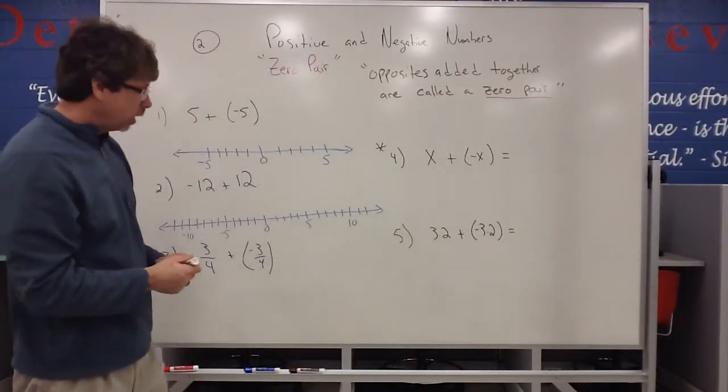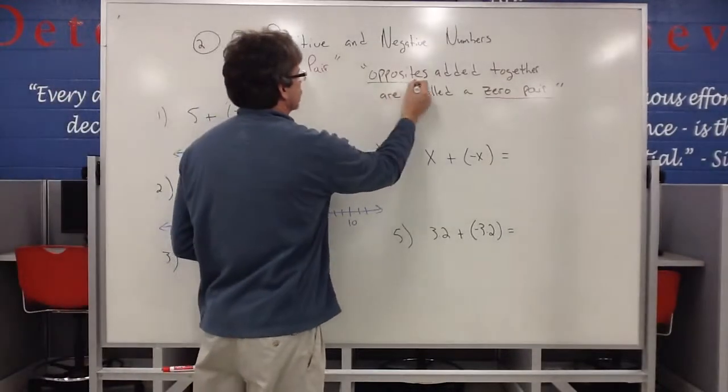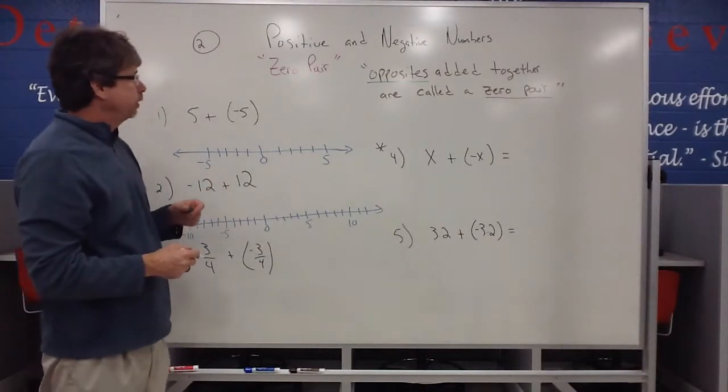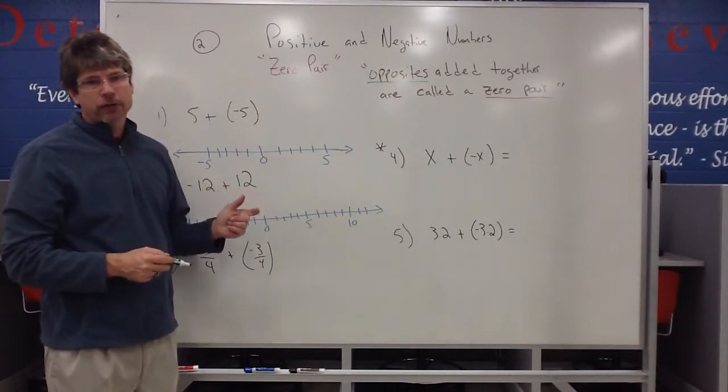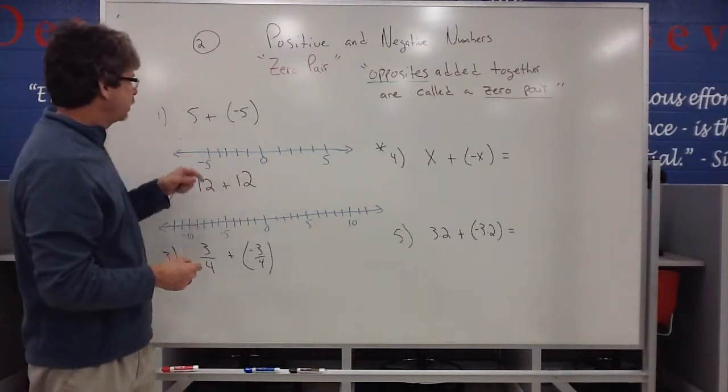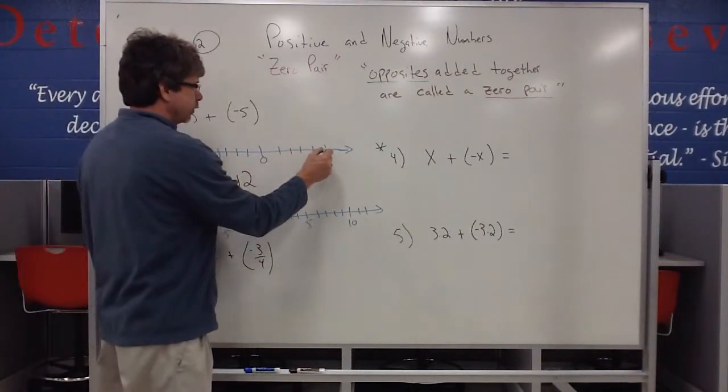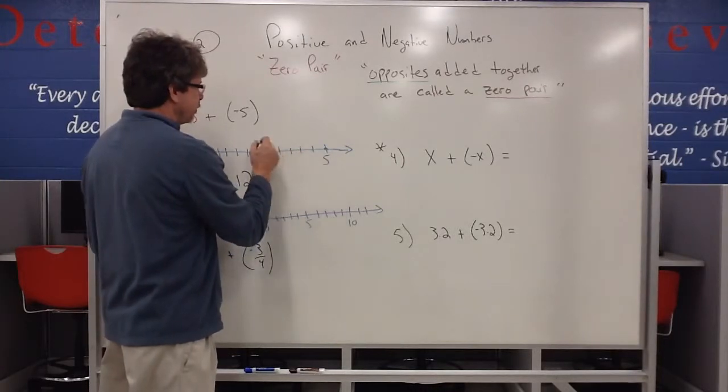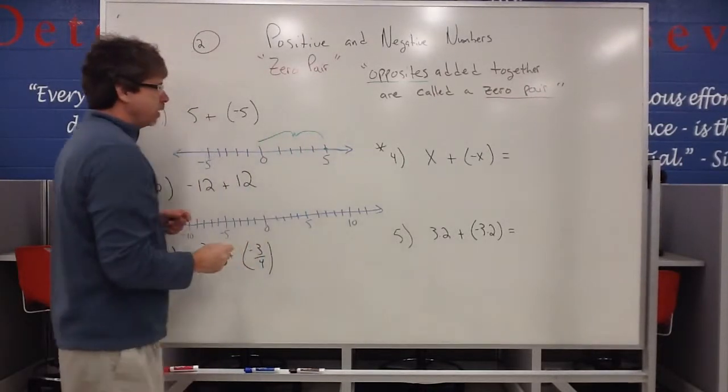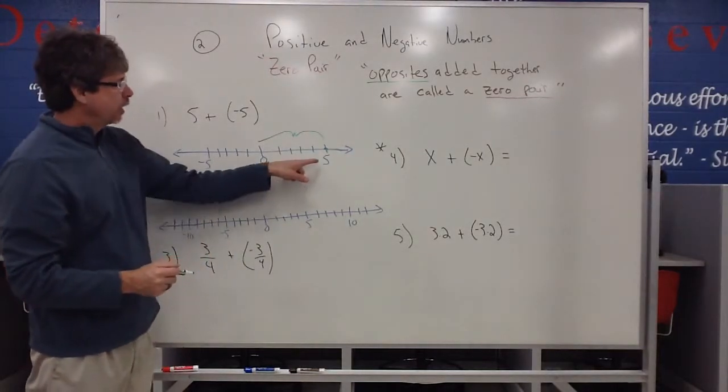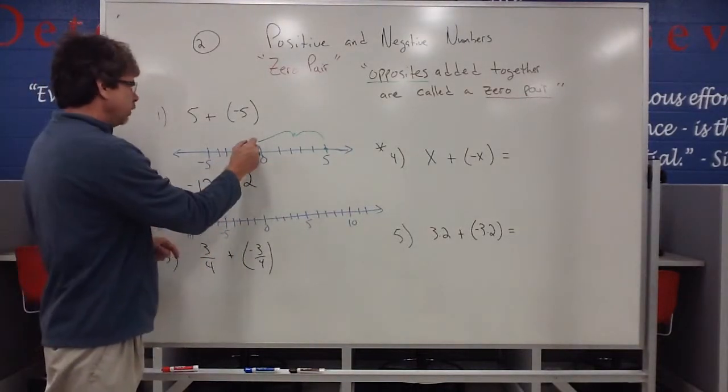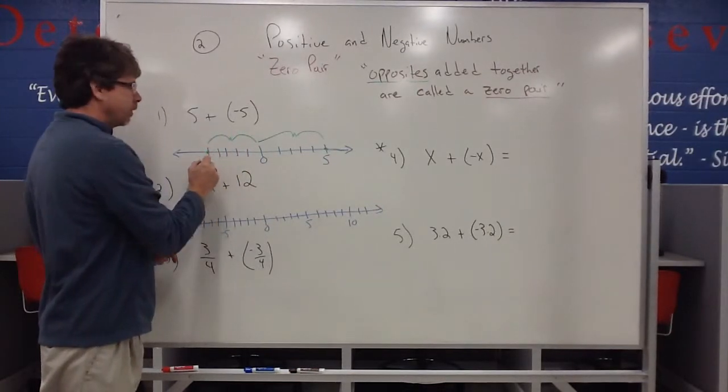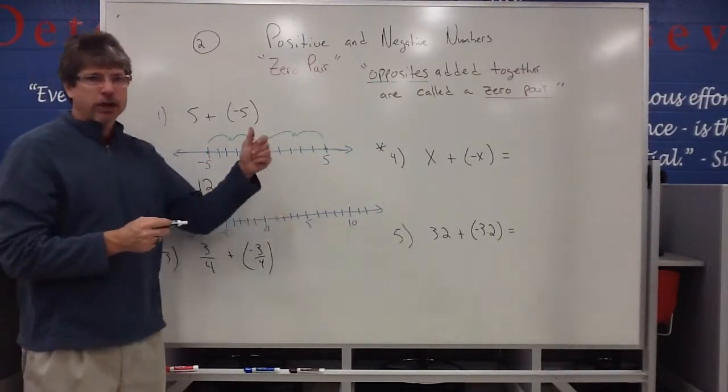Now, this word opposite. Opposites, for us in math, is basically a number that is the same distance from zero as the other number. For instance, five. If you look at five, five has a distance of one, two, three, four, five units from zero. Notice that negative five is also five units from zero, just in another direction.